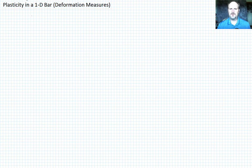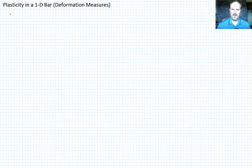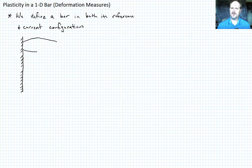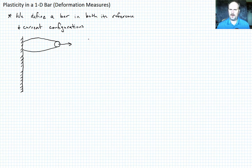Let's go ahead and set up the problem. We want to begin by defining the problem that we're looking at. We're going to define the bar in its reference and then in its current or deformed configuration. We'll draw our boundary condition — a fixed wall. One feature of a bar is that it doesn't have to have a constant cross section. We can see that the cross section varies. We'll apply a load, and label this our reference configuration — also called the undeformed state.